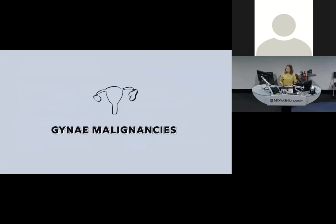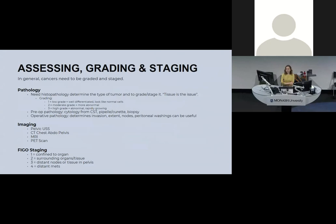The final topic is gynaecological malignancies. For all gynae cancers, you need to grade and stage using histopathology. Grading goes from 1 to 3: low-grade (grade 1) is well-differentiated and looks like normal tissue; grade 3 is high-grade, very abnormal, and rapidly growing. You get pathology either preoperatively — cytology from CST, endometrial biopsy, or propeller curette — or operatively. Imaging includes ultrasound, chest/abdo/pelvis CT, MRI, and PET. Gynae oncology uses FIGO staging, which is specific to each cancer type and runs from stage 1 to 4.